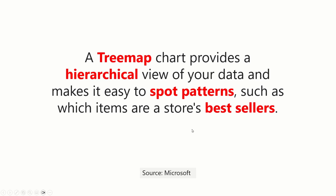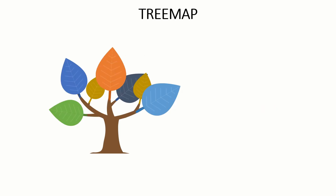A tree map is a chart that provides a hierarchical view of your data and it's supposed to make it easy to spot patterns which would be difficult to do with other charts. For example, if you have a list of products, a tree map can help identify which are the best sellers. I have heard that Amazon uses this type of chart quite often.